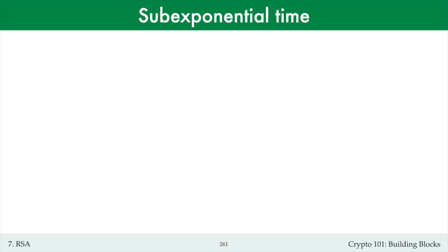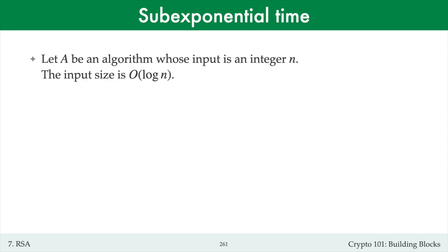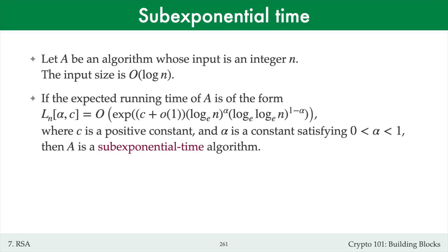I'll next give you an example of a sub-exponential running time that appears in the analysis of integer factoring algorithms. Let A be an algorithm whose inputs are elements of the integers modulo n, or an integer n, and so the input size is log n bits. If the expected running time of algorithm A is of the form L_n[alpha, c], defined by this expression, where c is a positive constant and alpha is a constant strictly between 0 and 1, then A is said to be a sub-exponential time algorithm. L_n[alpha, c] is big O of e to the power (c plus little o of 1) times log_e(n) to the power alpha times log_e(log_e(n)) to the power 1 minus alpha.